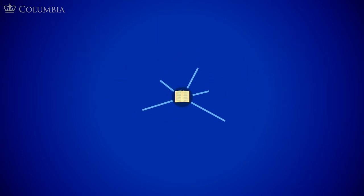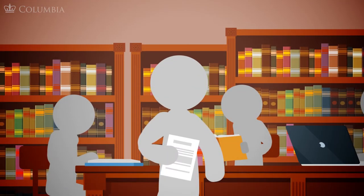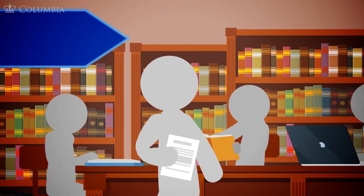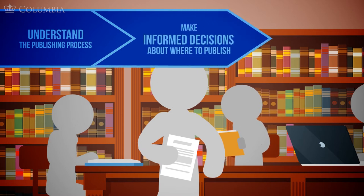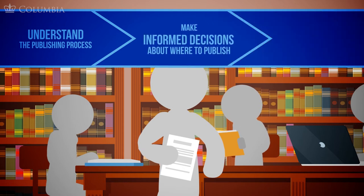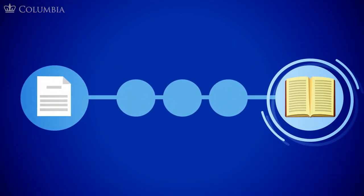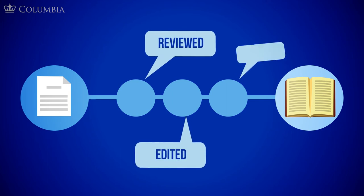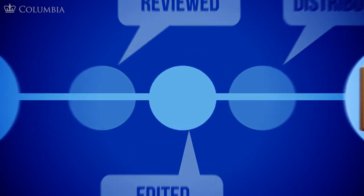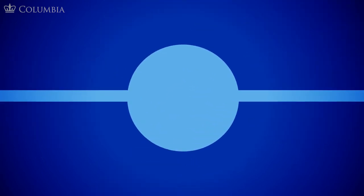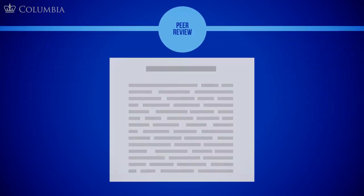There are many ways to preserve and share your research. The Columbia University Libraries are here to help you understand the publishing process, make informed decisions about where to publish, and discover how to reach new audiences. Publishing is a process in which scholarship is reviewed, edited, and distributed so that academics can share their research with students, colleagues, and the wider public.